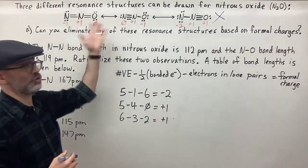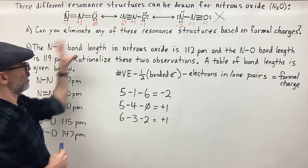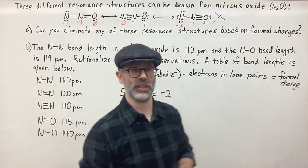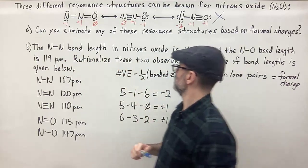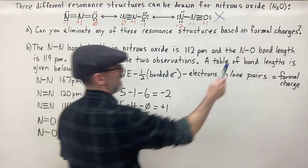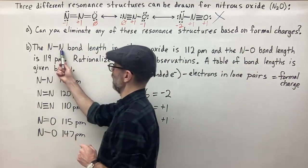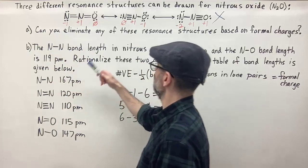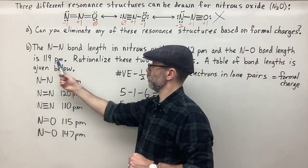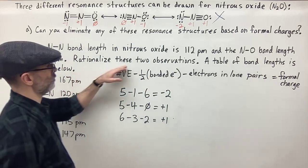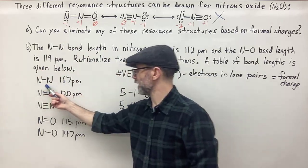So we're left with two resonance structures to work with. Using these two we can answer question B: the N-N bond length in nitrous oxide is 112 picometers and the N-O bond length is 119 picometers. We're given a table of bond lengths to rationalize these two observations.